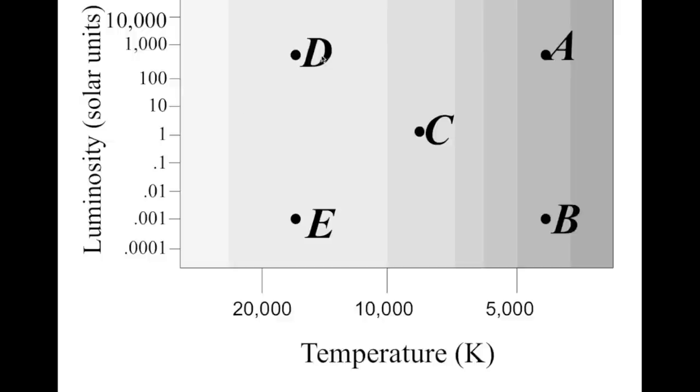The only way for object A to give off the same amount of energy per second as D, and yet be at a lower temperature, is for A's surface area to be much greater than D. A must be tremendously large, even though it's at a low temperature.